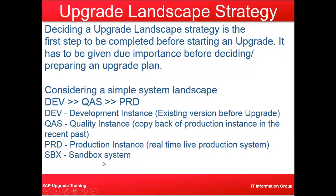On this screen you can see that you have your development system DEV, you have your quality system QAS, and you have your production system. This is your simple system landscape. For development you have your development instance — the existing version before upgrade. QAS is the quality instance, basically a copy of production from the recent past. Then you have the production instance, which is the real-time live production system, and you can have any other system like sandbox.